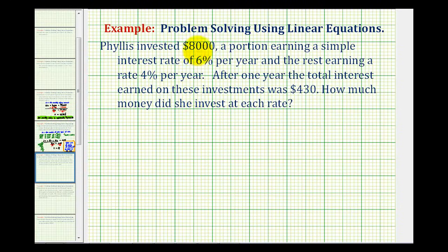So we know the total investment is $8,000. If we let x equal the amount at 6%, we could let the amount at 4% be 8,000 minus x.